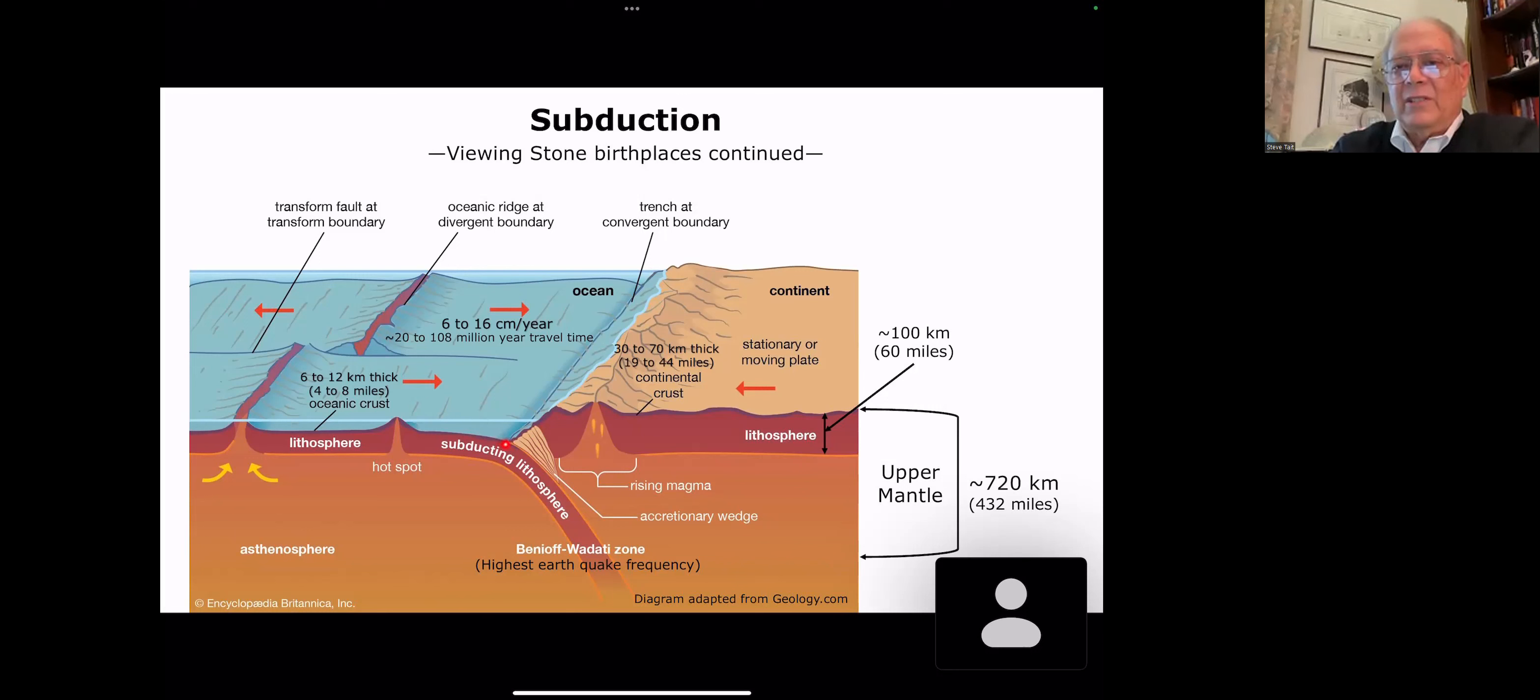When the ocean crust slams into the continental crust, it subducts. It's dragged underneath the surface. When you're bringing a lot of material in like this, something has to happen up here. And it pushes things up here to create your mountain ranges. You're also sucking in a lot of seawater as this is subducting. One feature here I want to point out is what they call the Benioff-Wadati zone. Down here in the subduction area, subduction zone, you get a very high earthquake frequency that contributes to the formation of the mountain ranges. We're talking about the upper mantle here on the order of 720 kilometers and 432 miles.